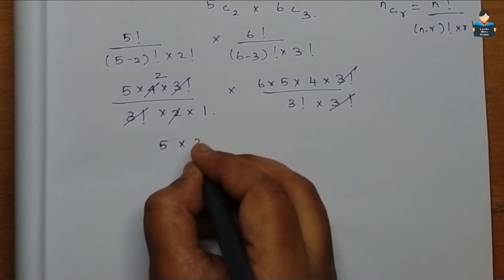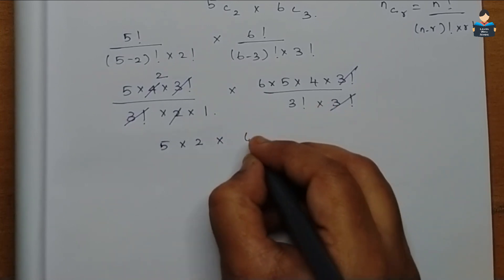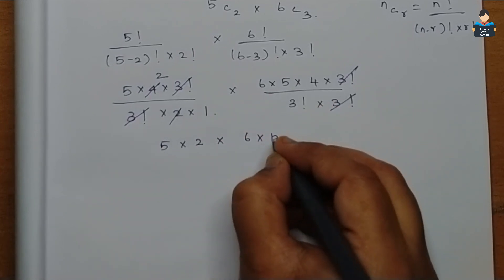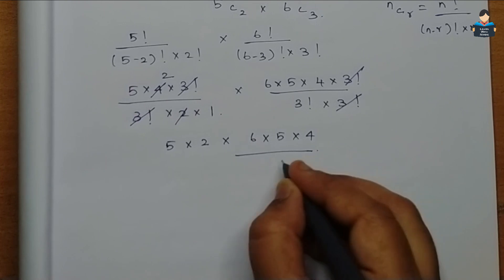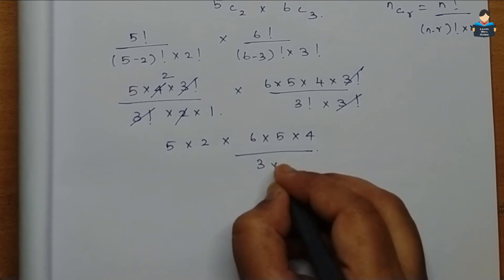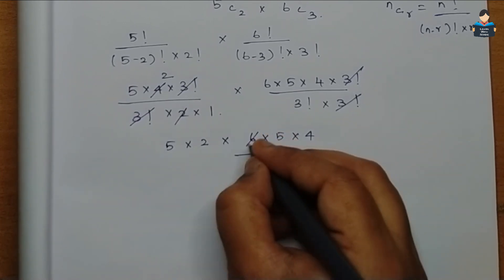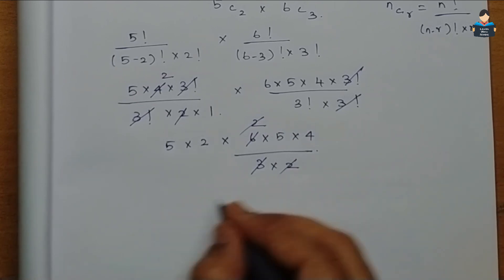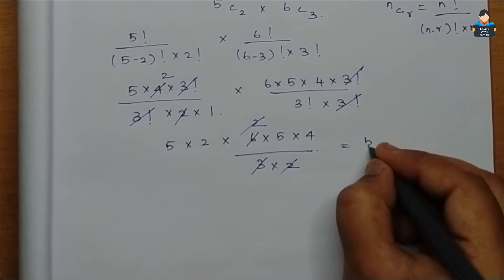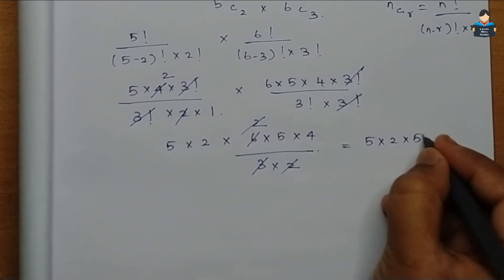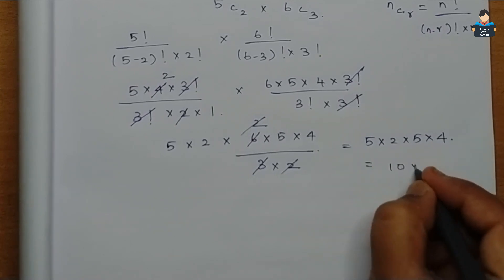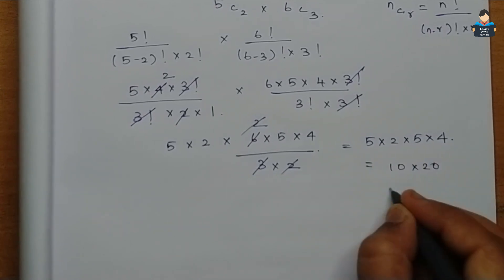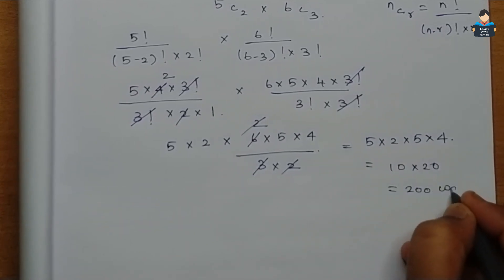After simplification: 5 into 2 into 6 into 5 into 4 divided by 3 into 2. The 3 and 2 cancel further, leaving 5 into 2 into 5 into 4, which equals 10 into 20, giving 200 ways.